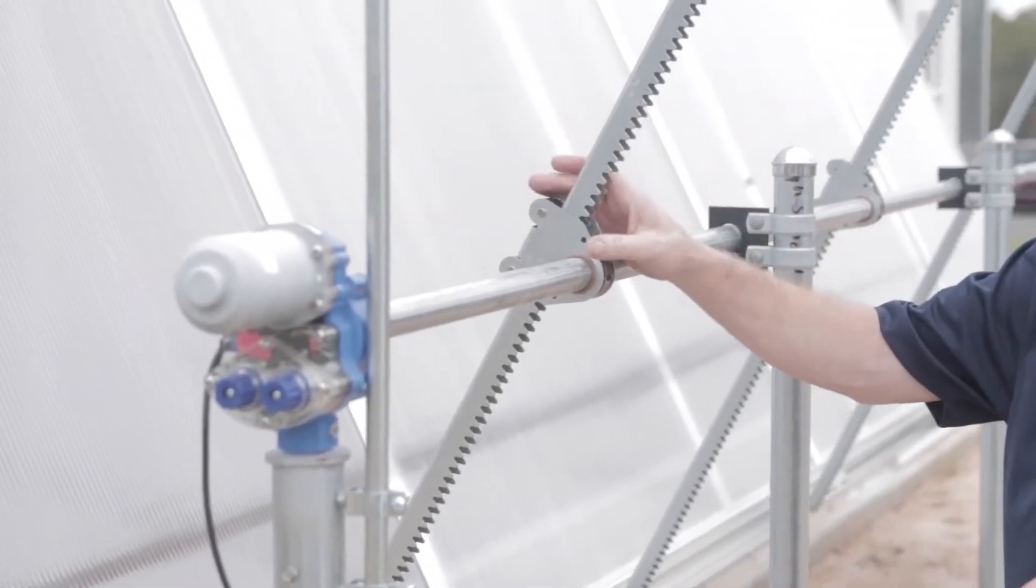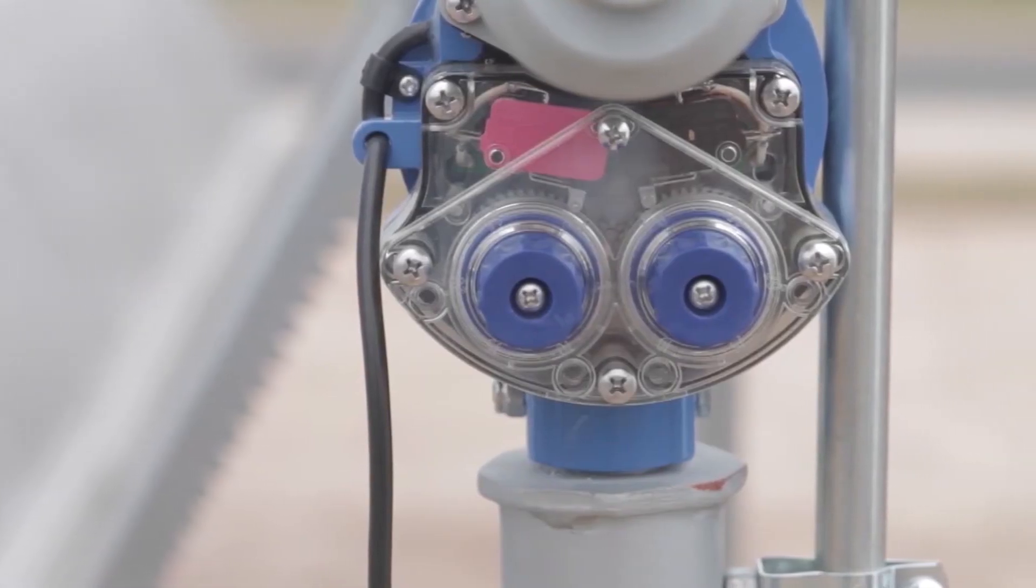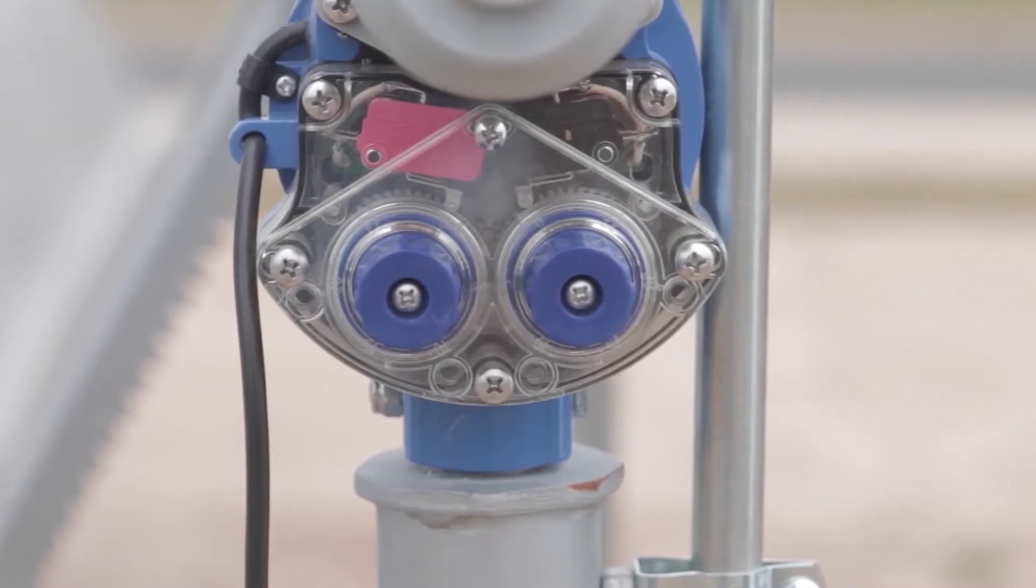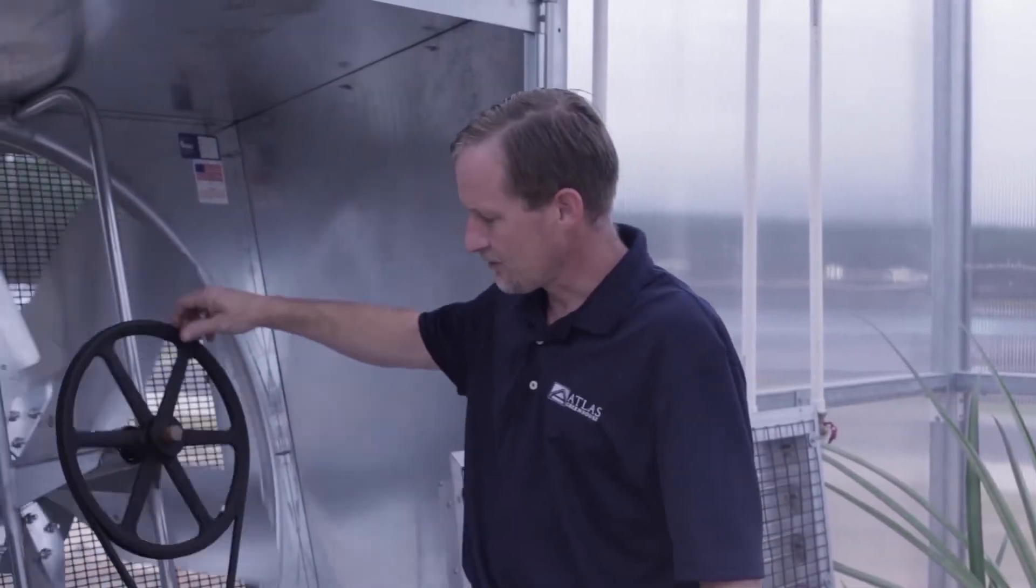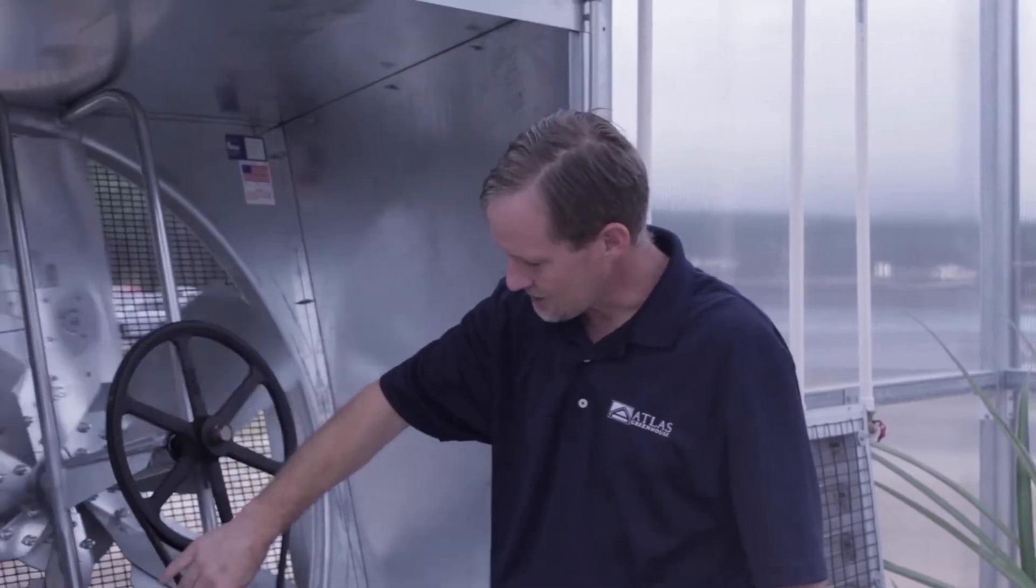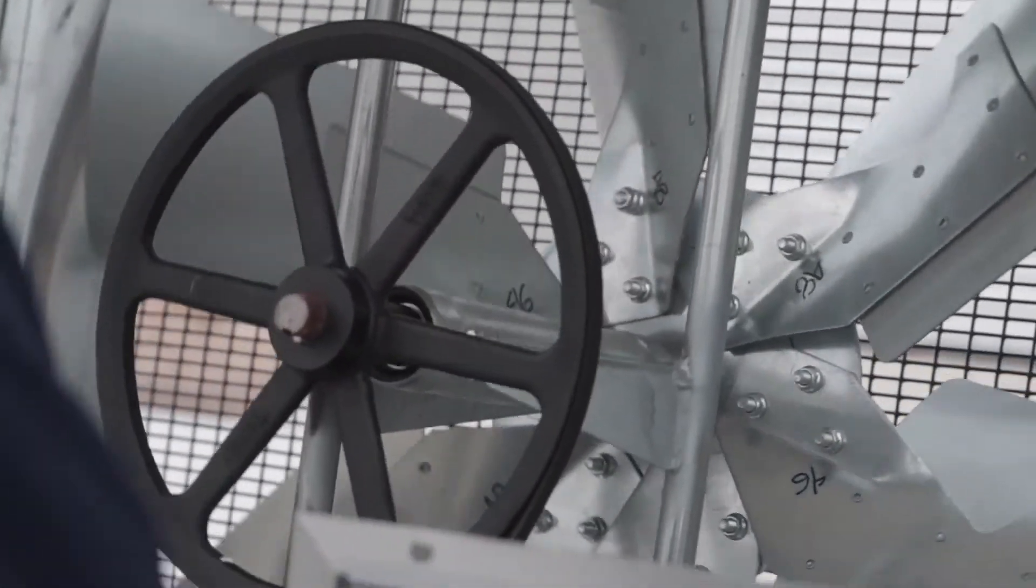The automatic wall vent located behind the cooling system provides an adequate seal when the evaporative cooling system is not operating. The slant wall fans are properly sized to provide the proper air exchange requirements for maximum cooling efficiency.